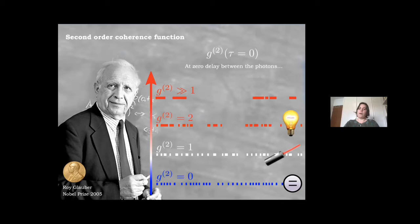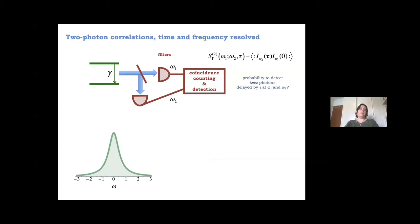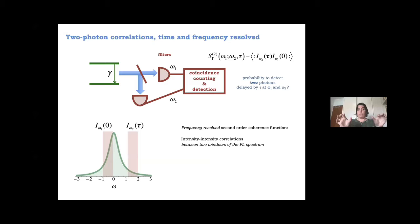Putting these two things together: experimentally, instead of standard detectors you place filters in front of them to select two different frequencies when measuring coincidences. This opens two frequency windows. If you have a Lorentzian emission spectrum, you select these two windows to look at correlations resolved in frequency. Now you have both frequency and time, asking: what is the probability to detect two photons delayed by tau that are emitted at two different frequencies omega1 and omega2?